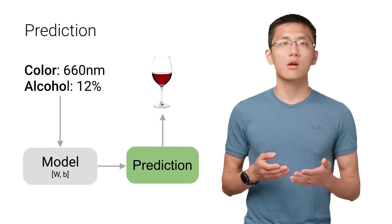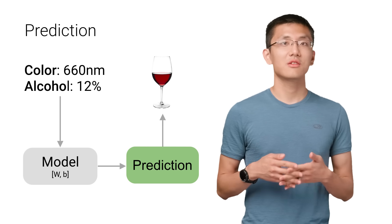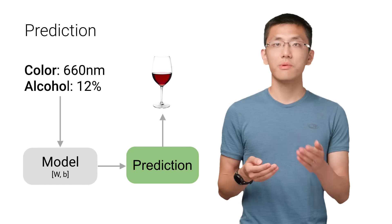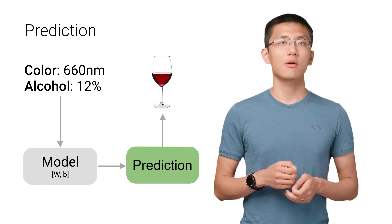This is the point of all of this work where the value of machine learning is realized. We can finally use our model to predict whether a given drink is wine or beer, given its color and alcohol percentage.